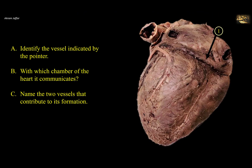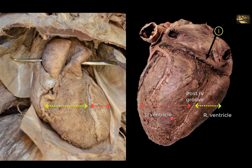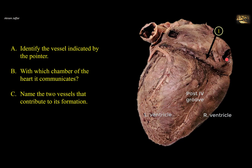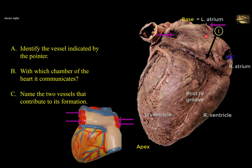Identify the vessel indicated by the pointer, with which chamber of the heart it communicates, and name the two vessels that contribute to its formation. This is a view of the inferior (diaphragmatic) surface of the heart. Note the posterior interventricular groove between the right and left ventricles. The predominant ventricle on the diaphragmatic surface is the left ventricle — opposite to the anterior surface where the right ventricle predominates. You can see the opening of the inferior vena cava into the right atrium, and at a higher level, the base of the heart formed by the left atrium with openings of the pulmonary veins — one pair shown, one on either side.